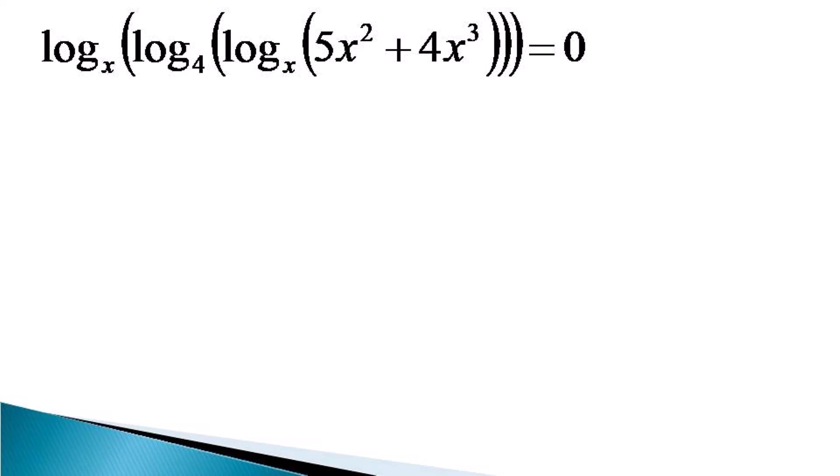The log of a quantity can equal zero when the quantity in the first bracket equals one. This indicates that the quantity in the first bracket is equal to one, irrespective of the value of x.